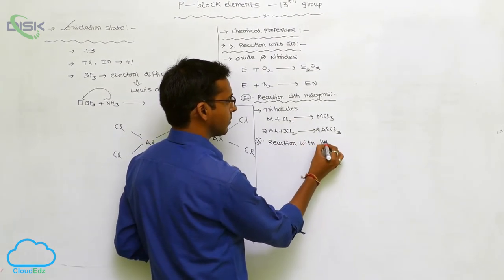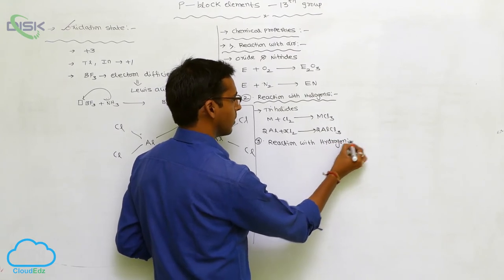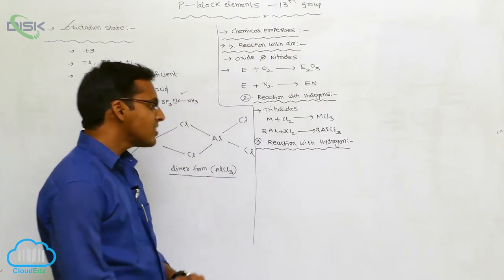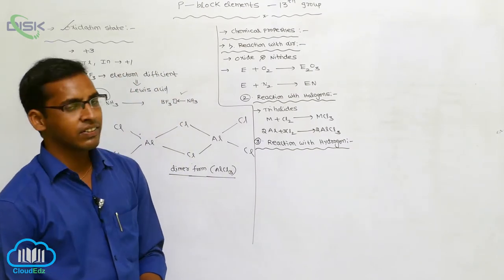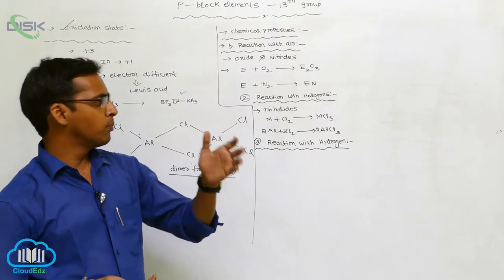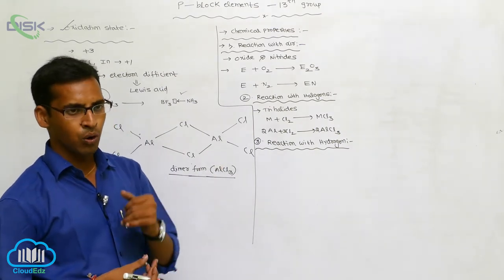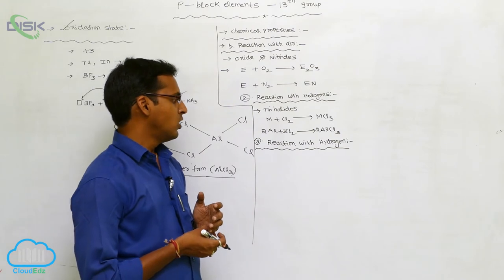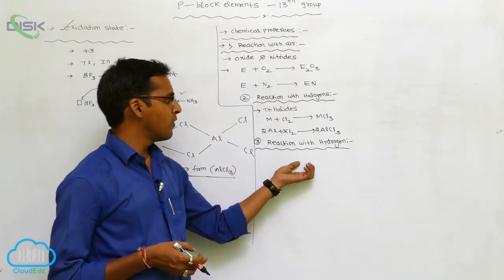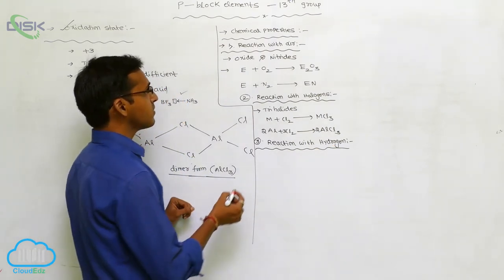The third chemical property is reaction with hydrogen. Metals react with hydrogen to form metallic hydrides. For example, boron forms BH3 (borane) as a monomer, and aluminium forms aluminium hydride. Different types of hydrides are produced when Group 13 elements react with hydrogen.